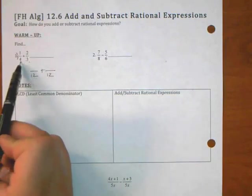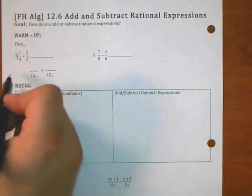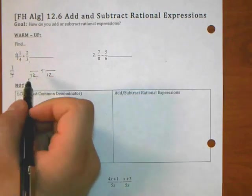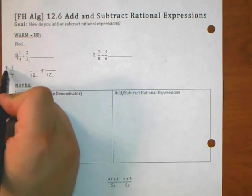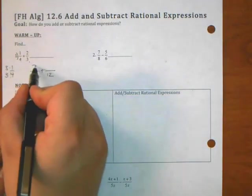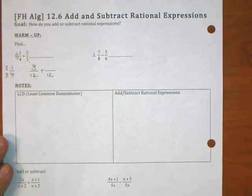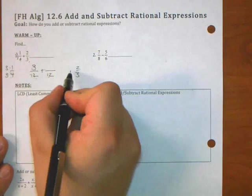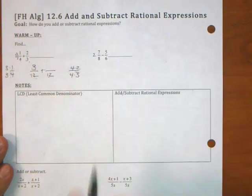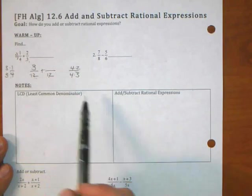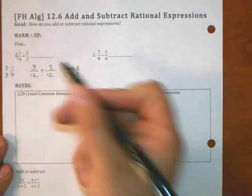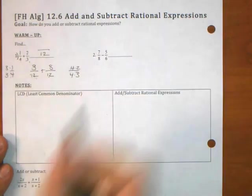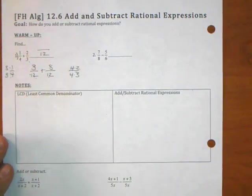So I need to rewrite one-fourth in terms of something over twelve. The easiest way to do that is to think, if I have one-fourth, what did I have to multiply four by to get to twelve? Three. So if I multiply four by three, I'm going to multiply the top by that same thing. So this should be three over twelve. If I had two-thirds, what did I have to multiply three by to get to twelve? Four. So I multiply the bottom, I multiply the top. I'm keeping this fraction balanced. So four times two is eight.